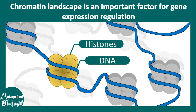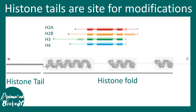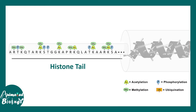The histones are basic proteins which have a conserved histone fold region and a tail. The histone tail is a site for extensive modification. There are many modifications that can occur in the tail, like acetylation, methylation, phosphorylation, and ubiquitinylation. In this video we'll focus on acetylation.